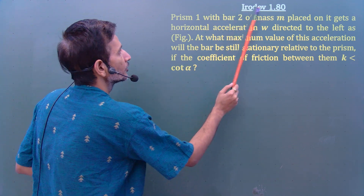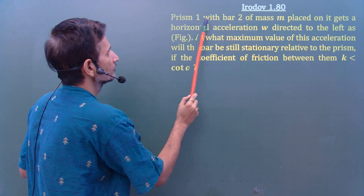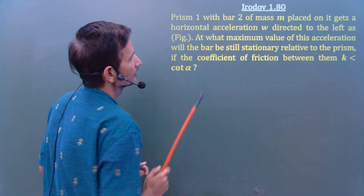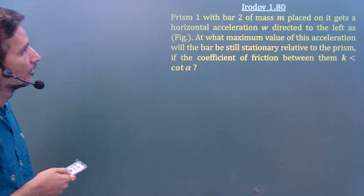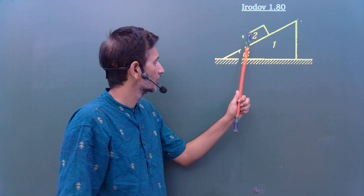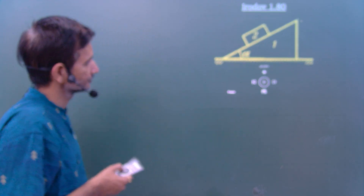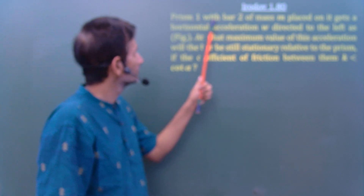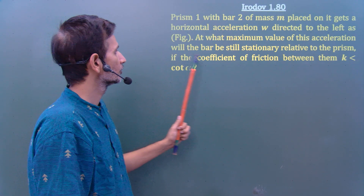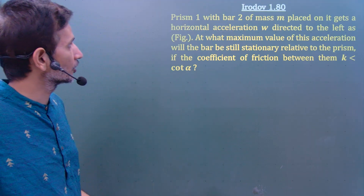Let us solve Irodov problem number 1.80. Prism 1 with bar 2 of mass m placed on it gets a horizontal acceleration w directed to the left, as shown in the figure. This is prism 1 and block 2; this angle is given as alpha. Block 2 is on the inclined plane. At what maximum value of this acceleration will the bar be still stationary relative to the prism, if the coefficient of friction between them is k, where k is less than cot alpha?